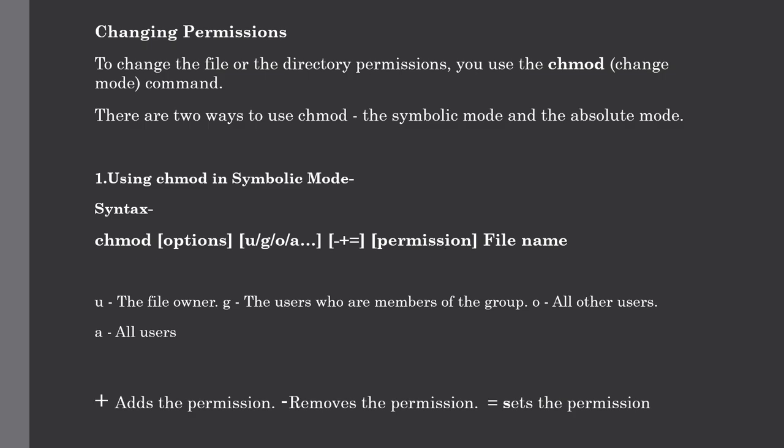If you want to specify which category to grant permission to, you put one of those letters. The next part is the symbol: plus to add a permission, minus to remove it, or equals to set the designated permissions exactly.